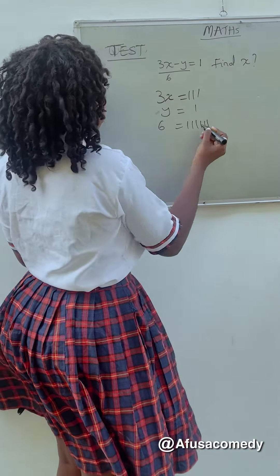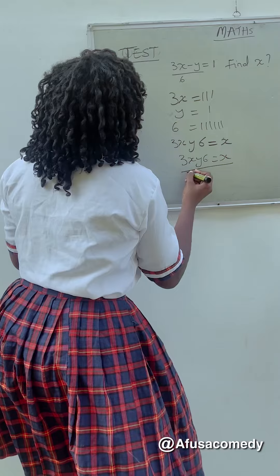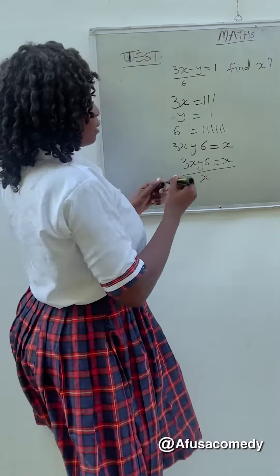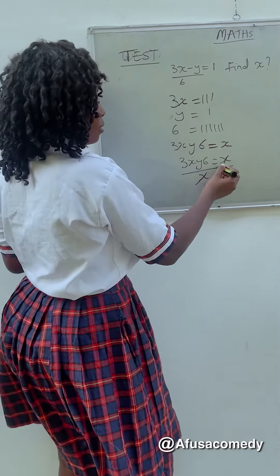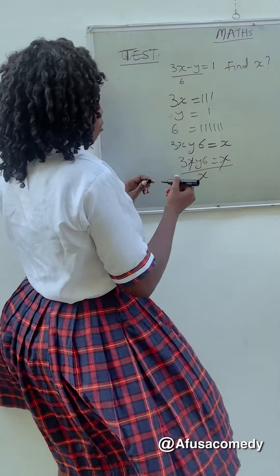So right now, this three combination will now be 3x, y, 6 is equal to x. What are you mad at? Something. We will now use cross multiplication. We will now use 3x minus y, 6 is equal to x over x.